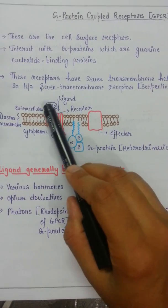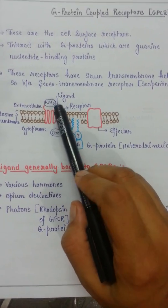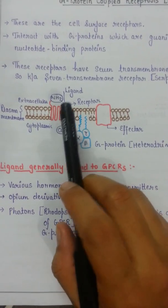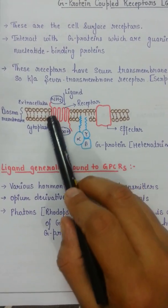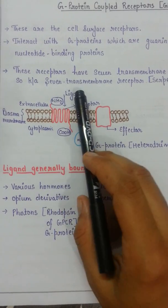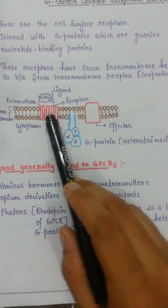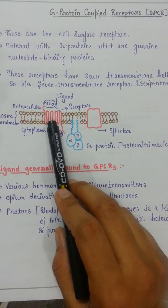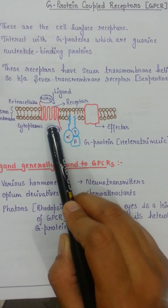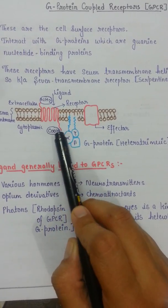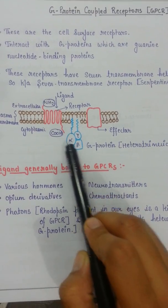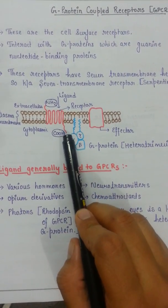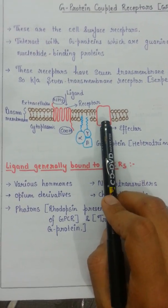The cytoplasmic domain has the carboxyl group attached to it. These receptors have loop-like structures which act as the ligand binding site. Whenever the ligand binds to the receptor, it undergoes a conformational change and becomes activated, which ultimately signals the G-protein, leading to its activation and the further signaling process.